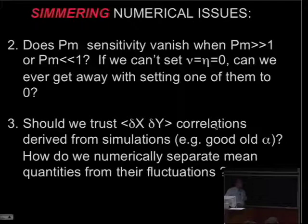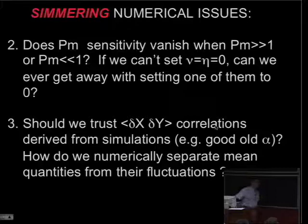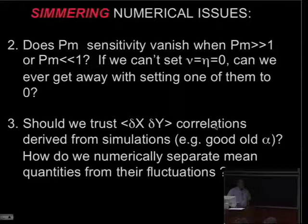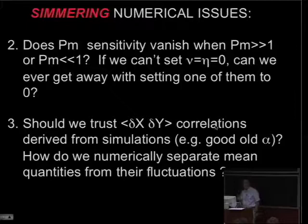What happens to the sensitivity to Prandtl number when it gets much bigger than 1 or much less than 1? Intuitively, one might think it would be much less sensitive. If we can't now set nu equals eta equals 0, can we ever get away with setting just one of them equal to 0 if we want to look at either very high or very low Prandtl number flows? That's something that has yet to be resolved.